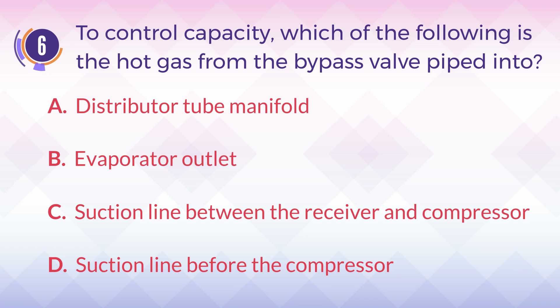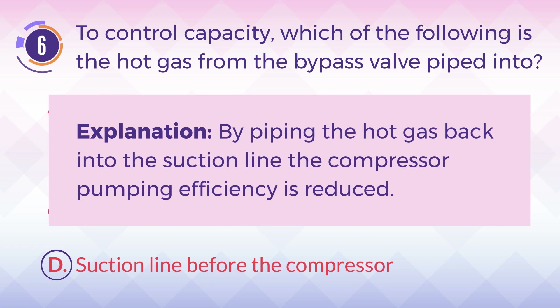The answer is D. Suction line before the compressor. Explanation: By piping the hot gas back into the suction line, the compressor pumping efficiency is reduced.